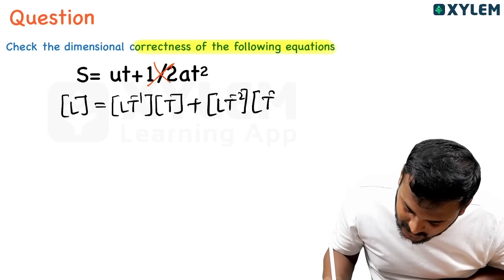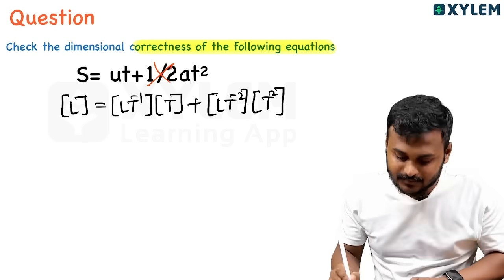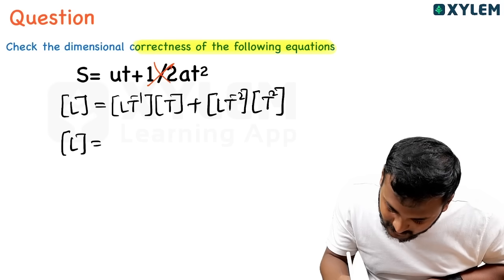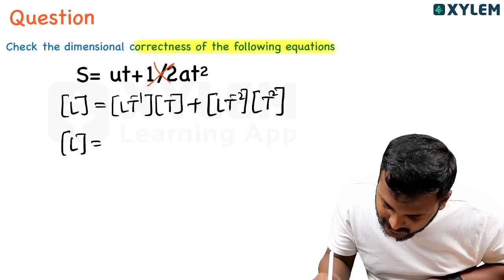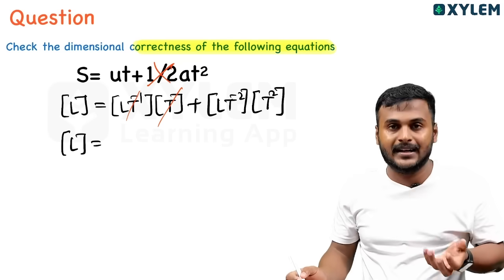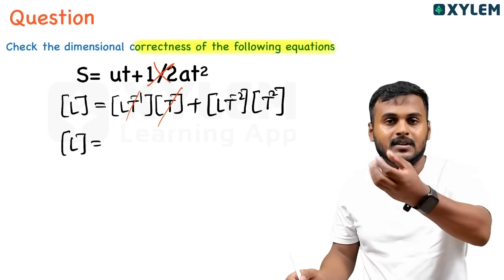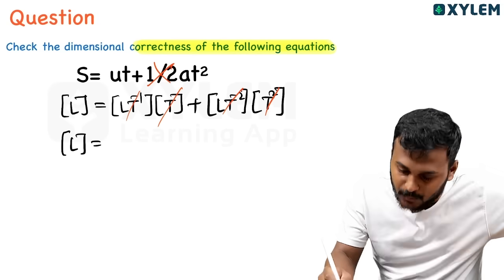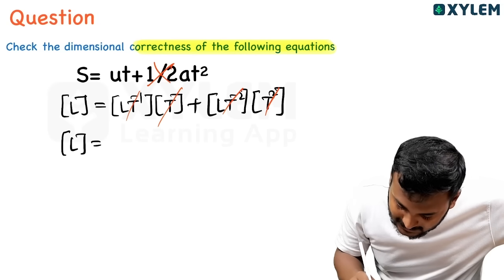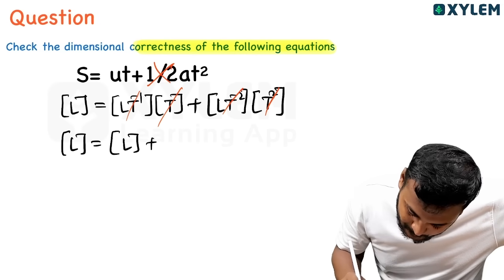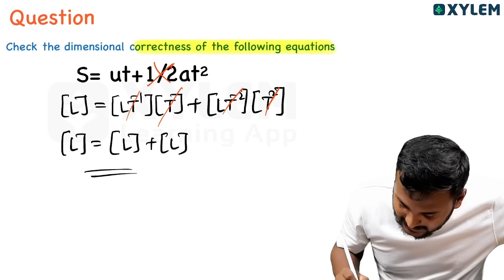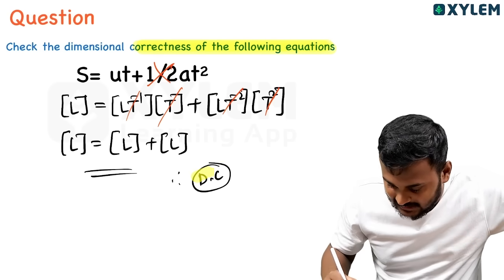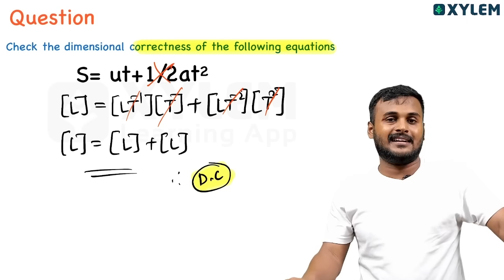Simplifying: L is equal to L, so the given equation S = UT + ½AT² is dimensionally correct.